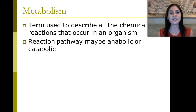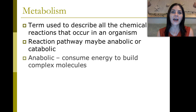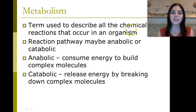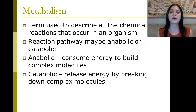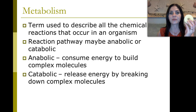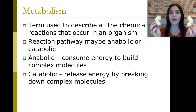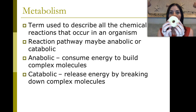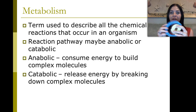Metabolism is a term used to describe all of the chemical processes and reactions that occur in an organism. The reaction pathway can be anabolic or catabolic. Anabolic means it consumes energy to build complex molecules. An anabolic reaction combines two molecules together with the help of an enzyme through the process of dehydration synthesis — the enzyme catalyzes that reaction. Since it's adding substrates together, it's called anabolic. Ana adds.